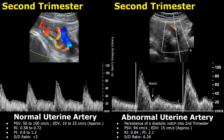In this example, the PSV is 94 centimeters per second and the EDV is 15 centimeters per second. But the resistive index is 0.84, which is abnormal as it is more than 0.72. The pulsatility index is 2.1, which is also raised. The SD ratio is 6.26, which is also elevated. So these three values are abnormal.